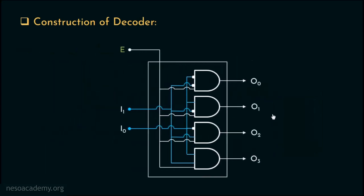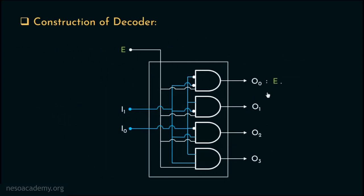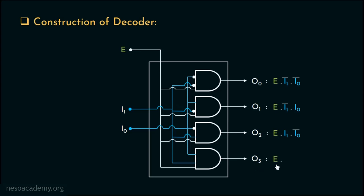To be precise: O0 is E·I1̄·I0̄, O1 is E·I1̄·I0, O2 is E·I1·I0̄, and finally O3 is E·I1·I0. Now the question remains — why are we so much interested about this E?